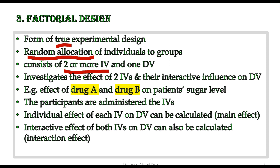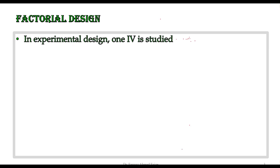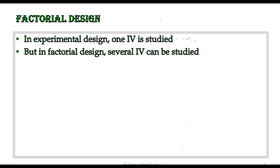Apart from main effects, we can also explore the interactive effect — that is, when both independent variables act on the DV simultaneously, how they change the values of the DV when interacting together. This is called the interaction effect. While experimental design deals with one independent variable, factorial design has the capacity to include more than one variable and examine their effects on the DV.